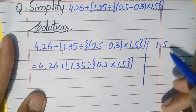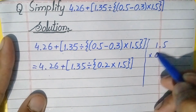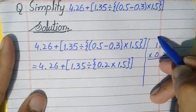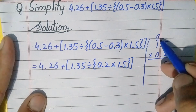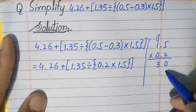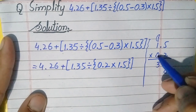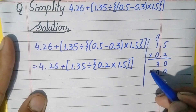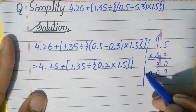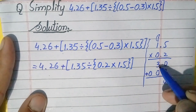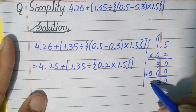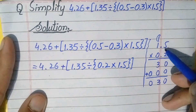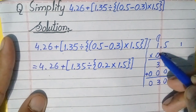In the rough work: 1.5 multiply 0.2. So 2 times 5 is 10, carry 1; 2 times 1 is 2, plus 1 is 3. Write down 0 here. Now multiply this 0 with this number: 0 times 5 is 0, and 0 times 1 is 0. Now add these two numbers: 0 plus 0 is 0, 3 plus 0 is 3, and 0 will come here.